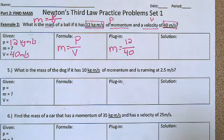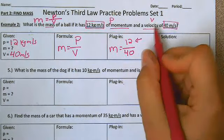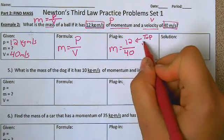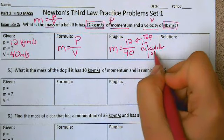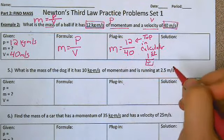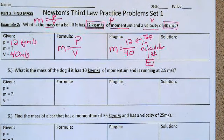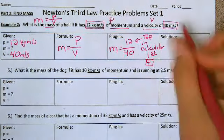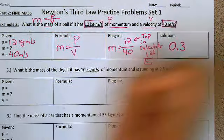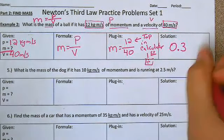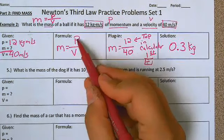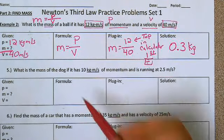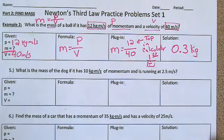When you put this into your calculator, make sure that the top number goes in first, then hit your divide sign. So we're going to do 12 divided by 40, which gives us 0.3. We were looking for mass, and the units for mass are kilograms. Use the same formula P over V for numbers five and six, then pause the video and move on to part three.